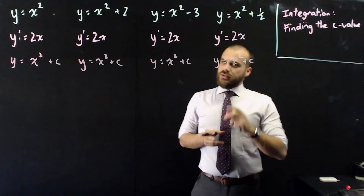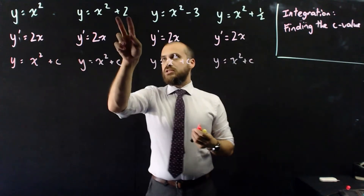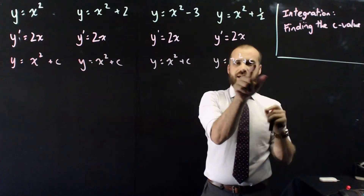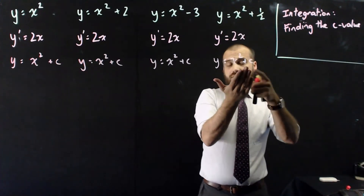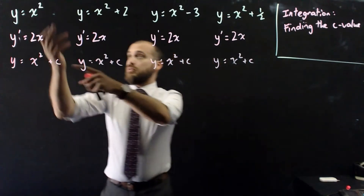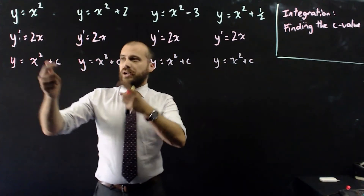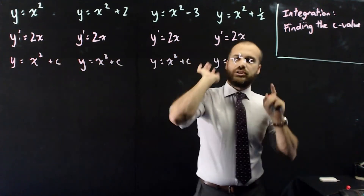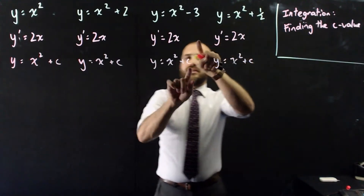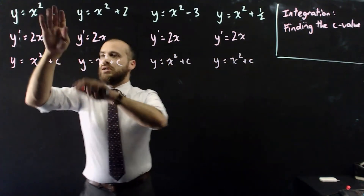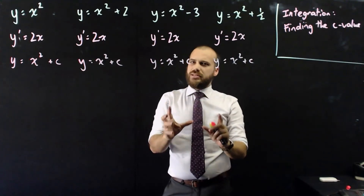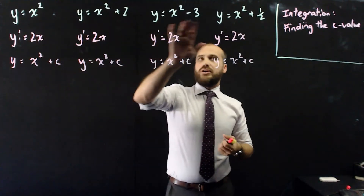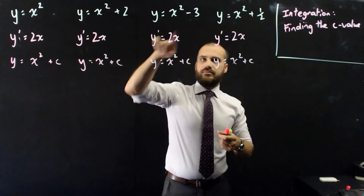Finding the derivative is a slightly destructive process because it gets rid of our constant and we can't find it back again. All I can say is that there might be a constant on the end. Just by looking at the integrated equation, I can't say the constant was a half, negative 3, or 2. That's why there's a plus c on the end — because multiple different equations give the same derivative.